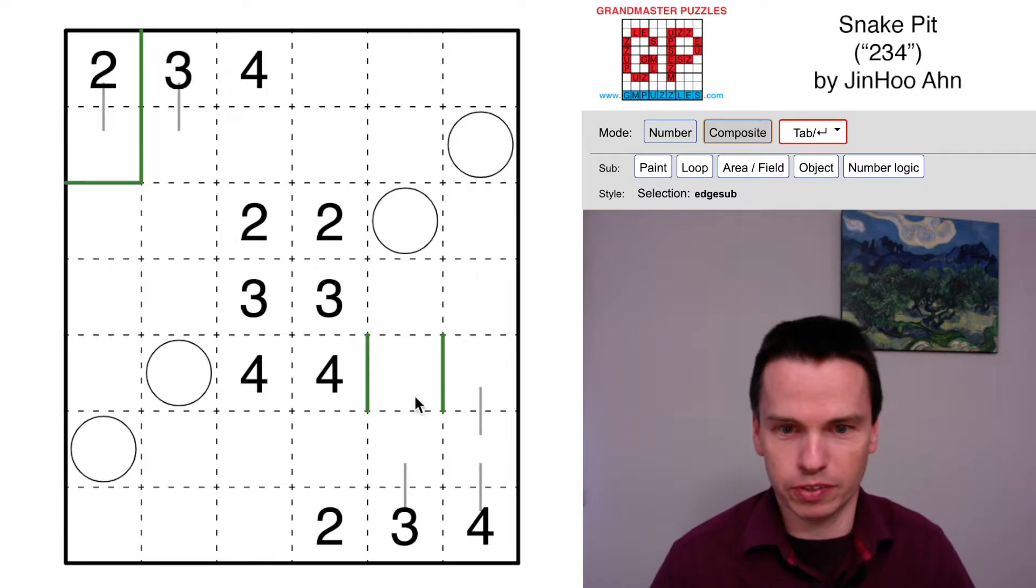That gives us our first volumino-like collision. This four can't come to the left because we've joined to another four group, so it comes up like this.